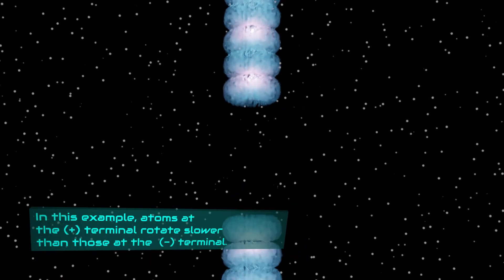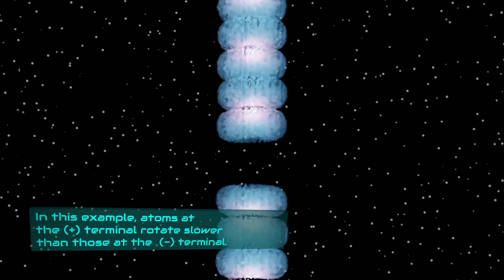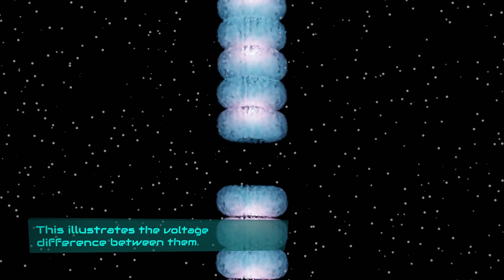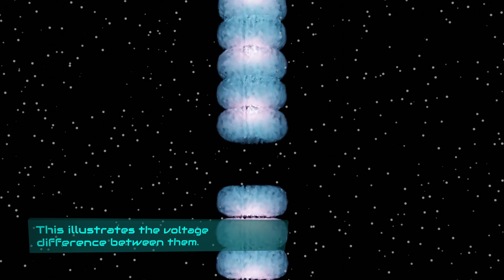In this example, atoms at the positive terminal rotate slower than those at the negative terminal. This illustrates the voltage difference between them.